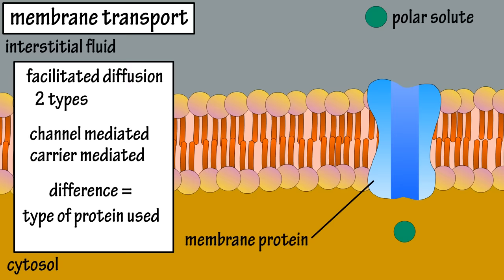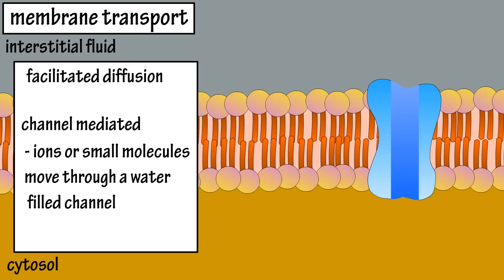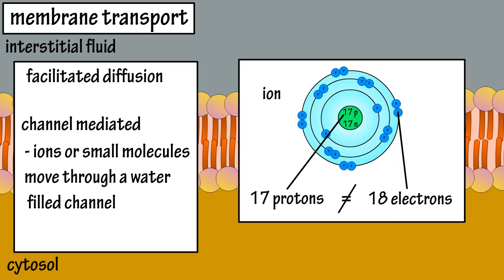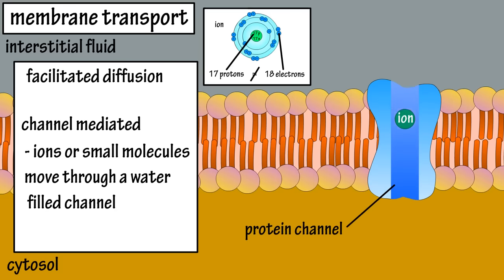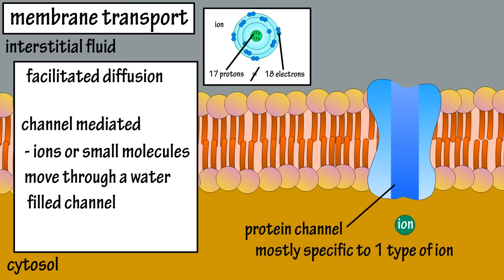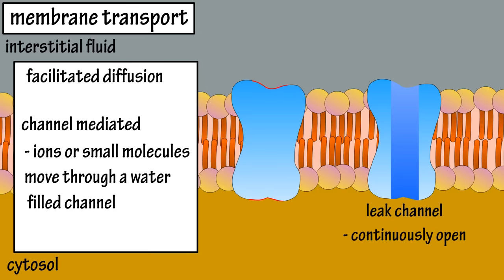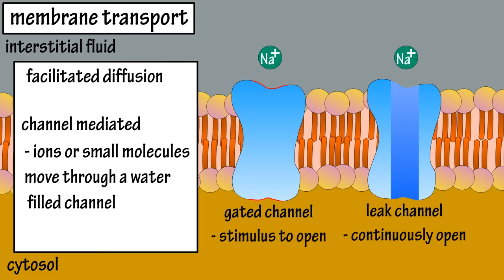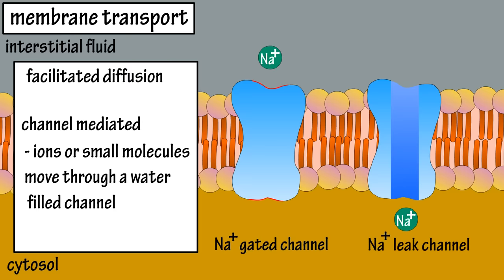The difference between the two is the type of transport protein used to move the substance across the membrane. Channel-mediated diffusion is when an ion — a charged particle where its total number of electrons does not equal its total number of protons, giving it a positive or negative charge — moves across the membrane through a water-filled protein channel. Each protein channel is typically specific for one type of ion. There are two types of channels: a leak channel, which is continuously open, and a gated channel, which only opens due to a stimulus and only stays open for a fraction of a second. For example, a Na+ ion can pass through a sodium leak channel continuously, while a gated sodium channel only opens due to a stimulus to allow the ion to pass into the cell.